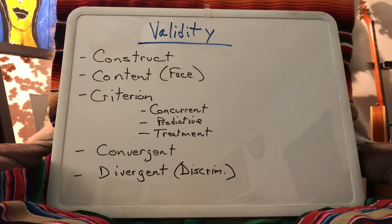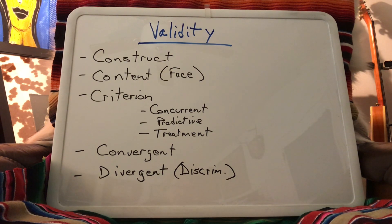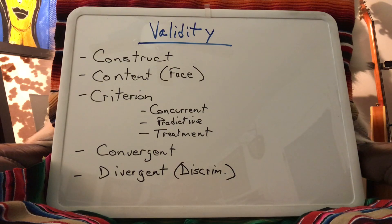When we're looking at validating a test, the first and overriding type is construct validity. In the behavioral sciences such as counseling, we're having to construct a meaning — when we say we're going to measure happiness, we have to construct a definition of what that is. There's not going to be one single way to determine construct validity; we use all these different methods to determine construct validity for concepts like happiness, depression, anxiety, or purpose in life.